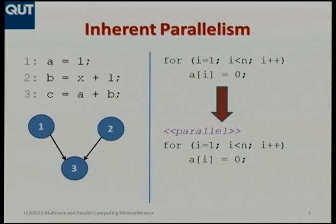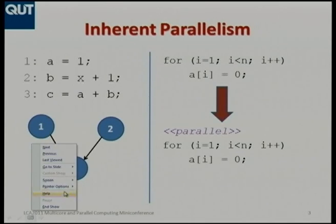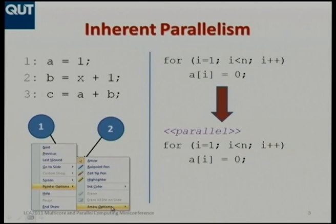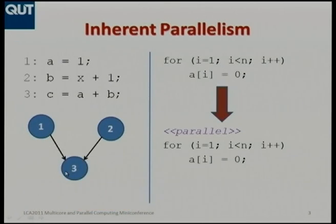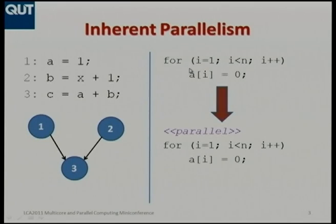What I'm considering instead is going from a sequential program to a parallel program by exploiting so-called inherent parallelism. Here are some trivial examples. You can see the third statement on the left-hand side depends on the first and second computations having completed, but there are no dependencies between the first and second statements, so we could execute them in parallel. A more interesting example is a loop where the original program was sequential, but since all we're doing is initializing each element of an array, there's no reason we can't do all that in parallel. I'm not fundamentally changing the algorithm — I'm just exploiting parallelism that existed in the original program.